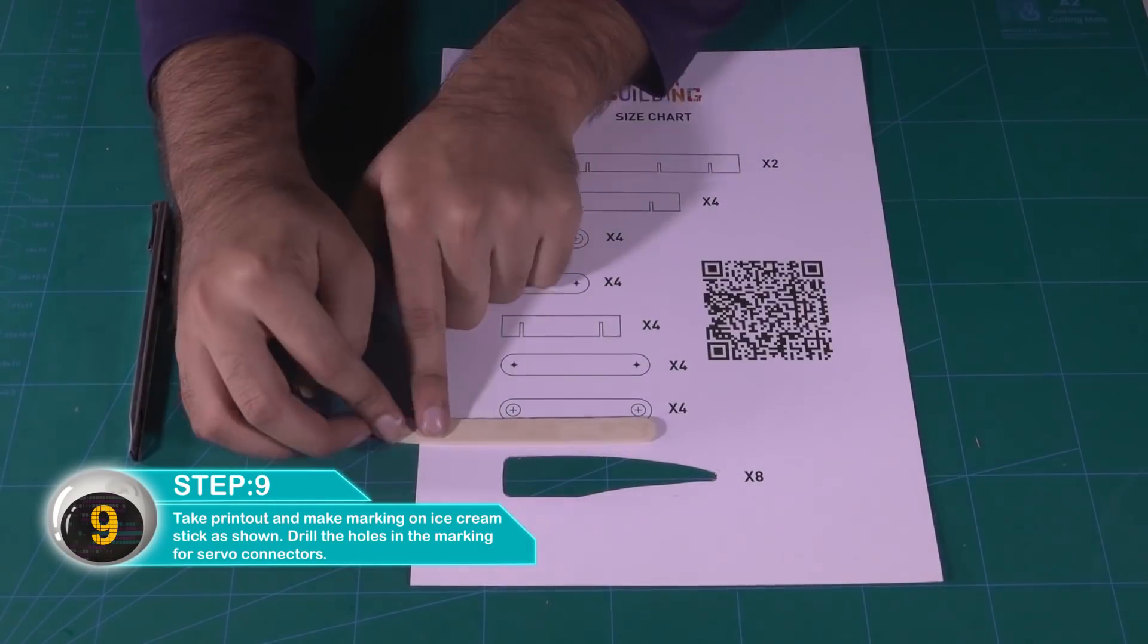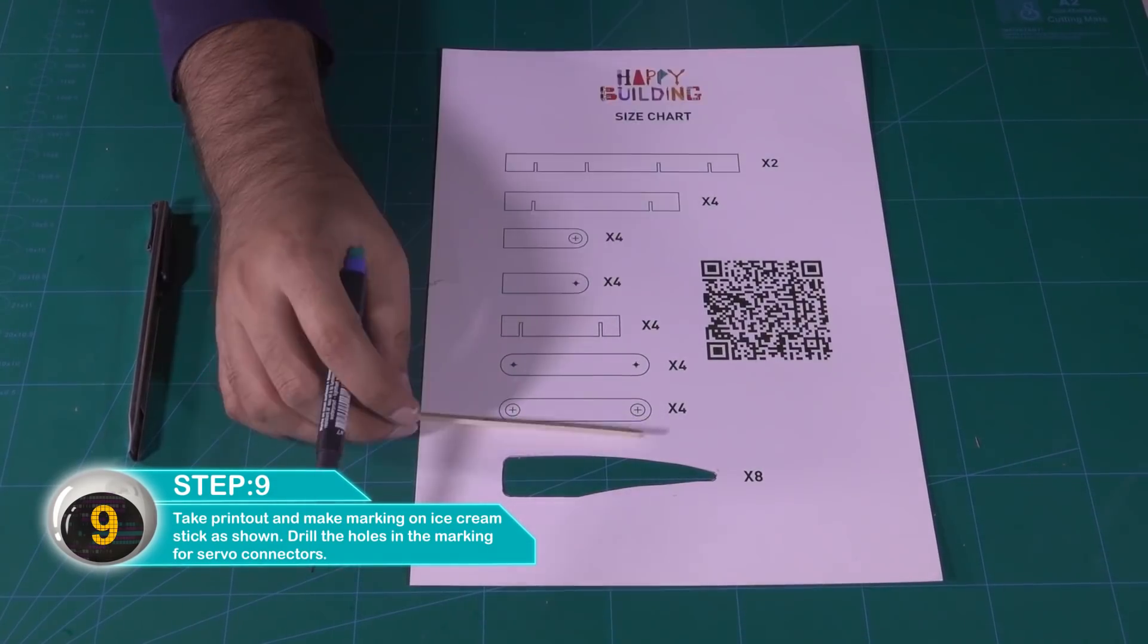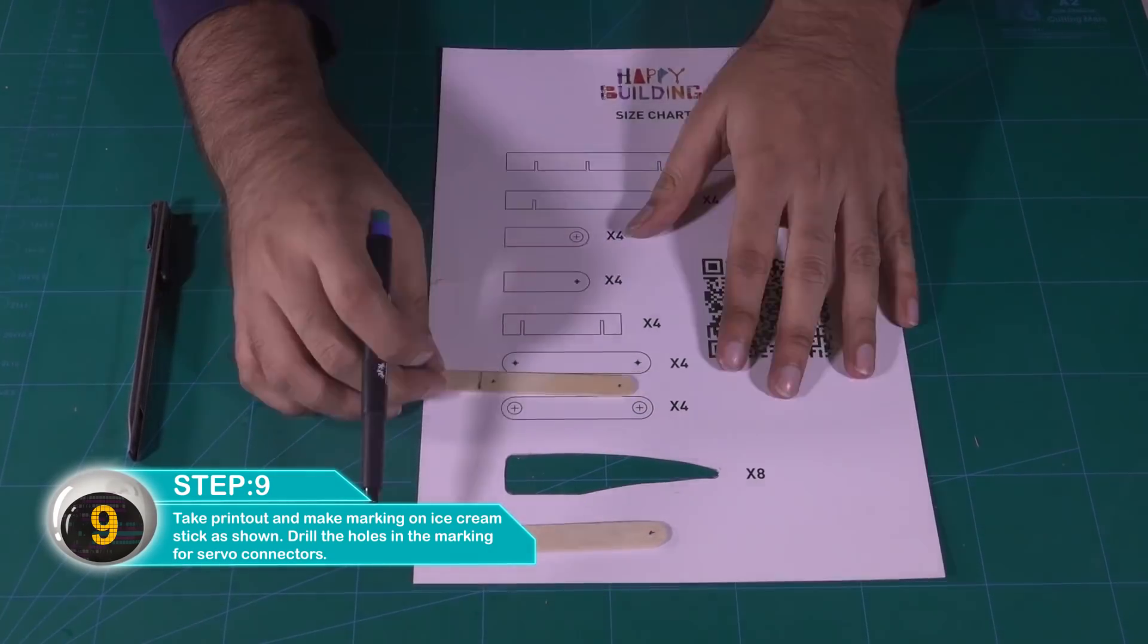Take printouts and make markings on ice cream sticks as shown. Drill the holes on the markings for the servo connectors.